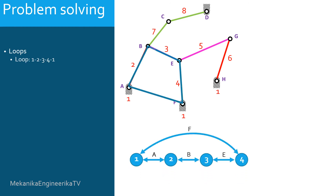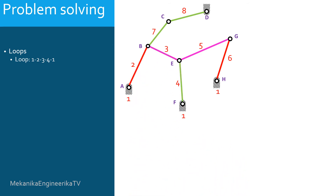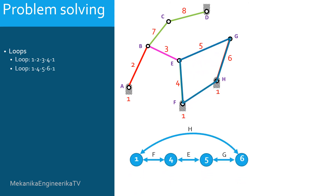There is a first loop made by links 1, 2, 3, and 4. Link 1 is connected to link 2 by pin A. Link 2 is connected to link 3 by pin B. Link 3 is connected to link 4 by pin A. The loop is closed by the pin in F connecting links 1 and 4. There is a second loop made by links 1, 4, 5, and 6. Link 1 is connected to link 4 by pin F. Link 4 is connected to link 5 by pin E. Link 5 is connected to link 6 by pin G. The loop is closed by pin in H connecting links 1 and 6.